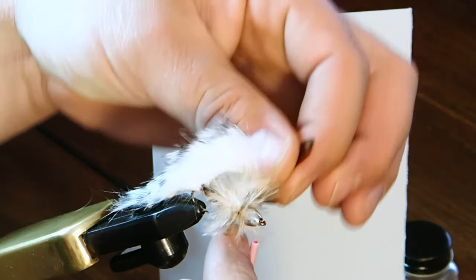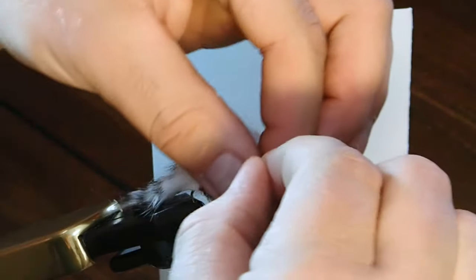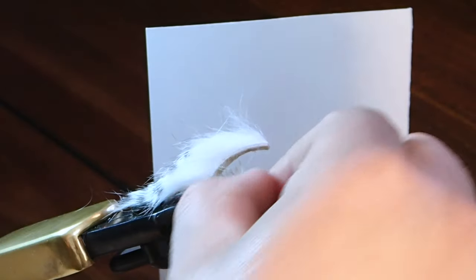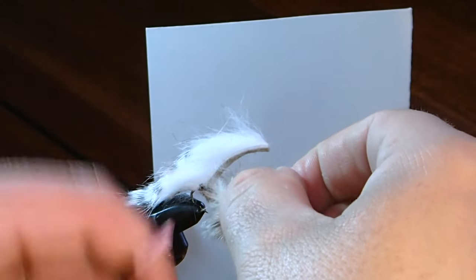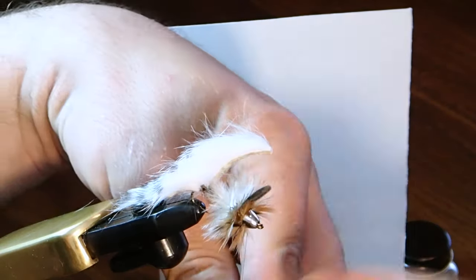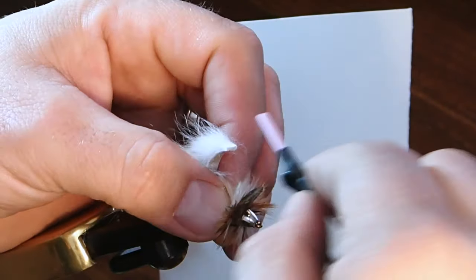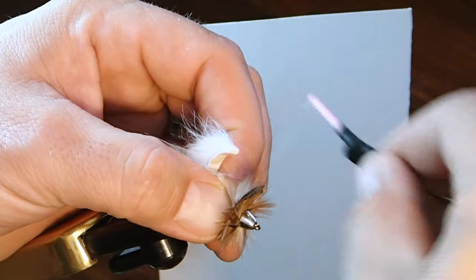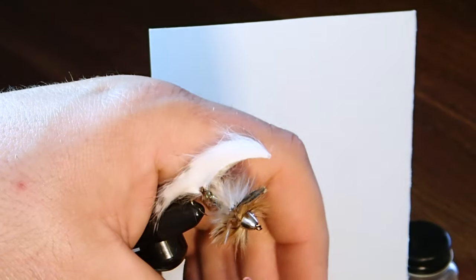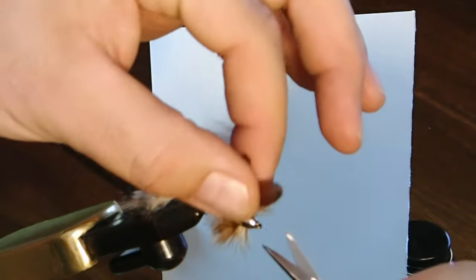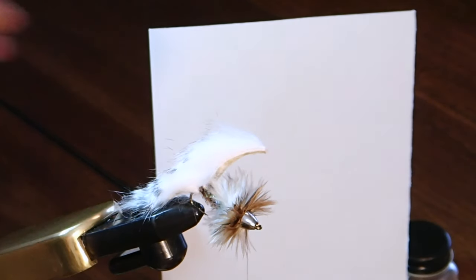And then we'll just make a couple of turns with those three feathers, makes a nice fluffy collar, couple of turns there. I mean, this is going to imitate really fins on a fish, and when it gets wet in the water, it moves and has a real natural appearance. We'll lock these down with a couple of turns, trim off the excess on those three feathers at the top.